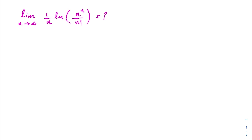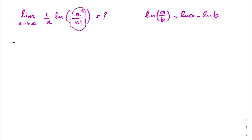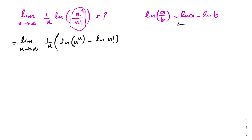First, we know that we have natural log of n raised to the n over n factorial. We will use the property of natural log: natural log of a over b equals natural log of a minus natural log of b. So we can write our limit as n approaches infinity of 1 over n times the quantity natural log of n raised to the n minus natural log of n factorial.